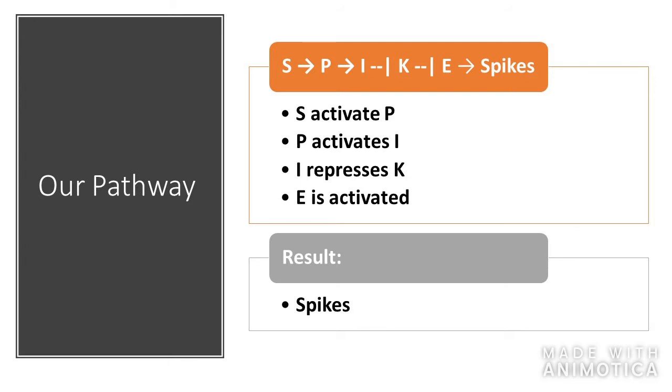For our pathway here for spiky cells, we have the S gene activates the P gene, which then activates I. I inhibits K and prevents it from inhibiting the E gene, so then the E gene is allowed to activate the spiky cell.